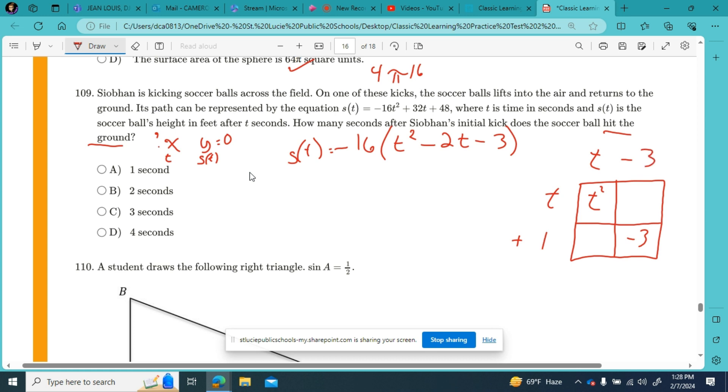And t times negative 3 is negative 3t, t times 1 plus 1t. Negative 3 plus 1 is negative 2. So this checks out. So I've got s(t) equals negative 16 times (t minus 3) times (t plus 1). And how can I make this equal to zero?